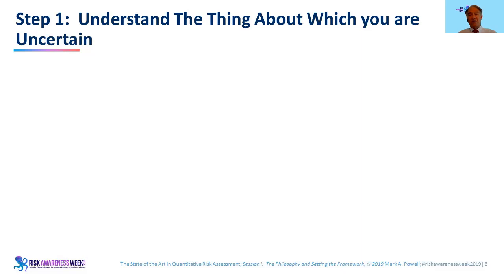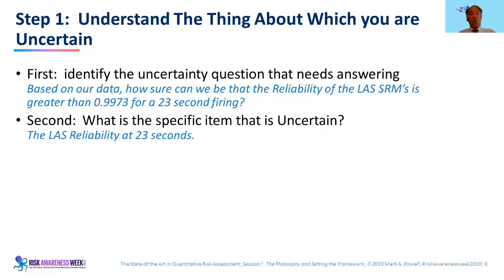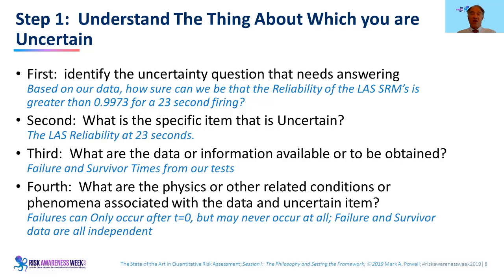What we need to know is how sure we can be that the launch abort system reliability at 23 seconds exceeds 99.73%. NASA decided they want to be 90%+ sure that the reliability at 23 seconds meets 99.73% before accepting the design. Step one: understand what we're uncertain about. The uncertainty question is: based on our data, how sure can we be that the reliability of the launch abort system is greater than 99.73% for a 23-second firing? The specific uncertain item is the reliability of the launch abort system at 23 seconds.